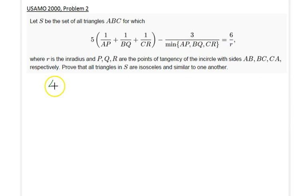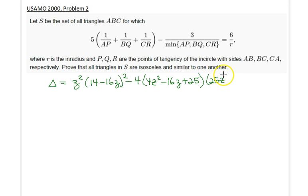So the discriminant here would be simply equal to, well, z squared, 14 minus 16z squared, minus four times four times four z squared minus 16z plus 25 times 25z squared. And luckily this can be written as minus 144 z squared times z minus four squared.